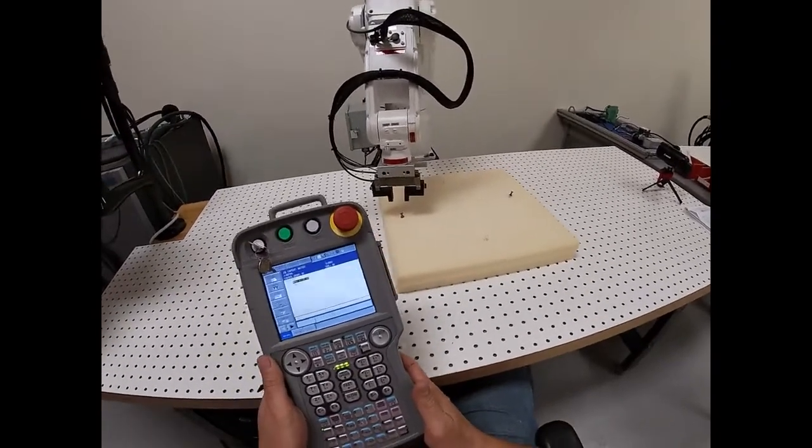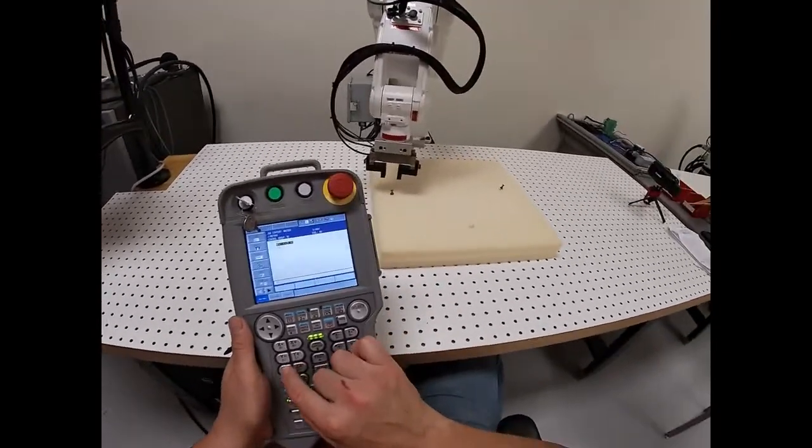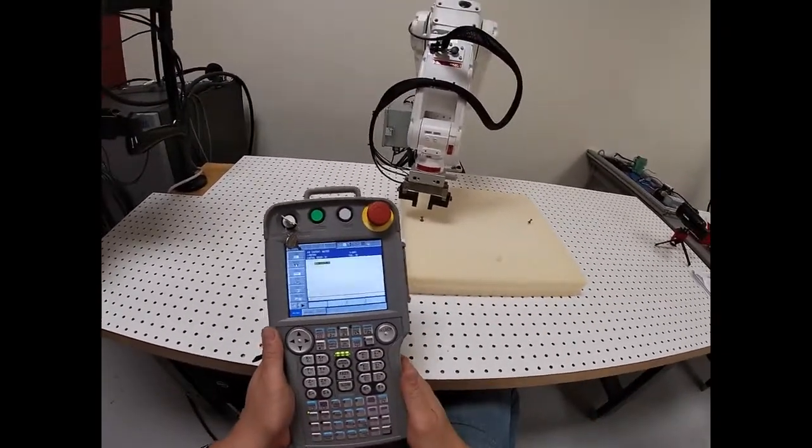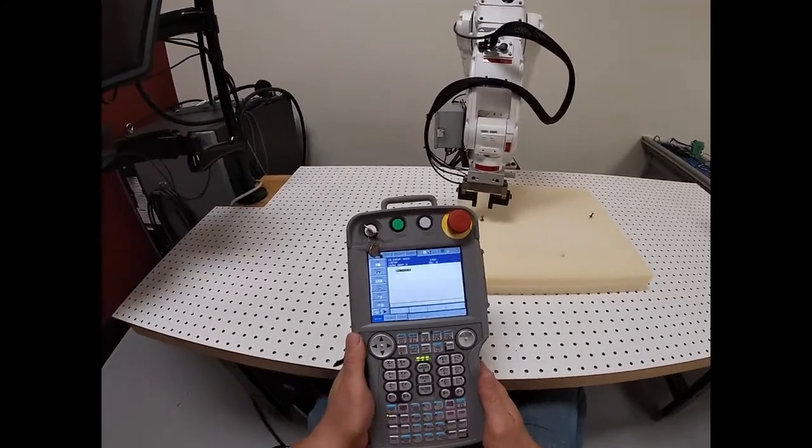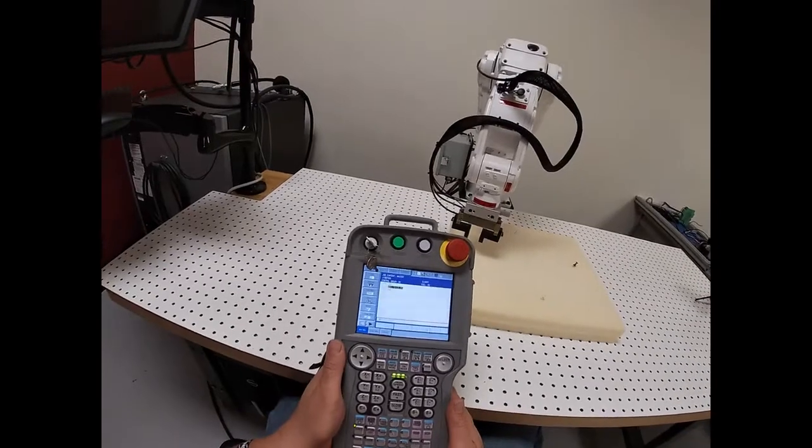Right there. So now my robot is positioned about maybe an inch, maybe I'll make it a little lower, inch and a quarter. It's about an inch above my position where I want to necessarily pick up something.